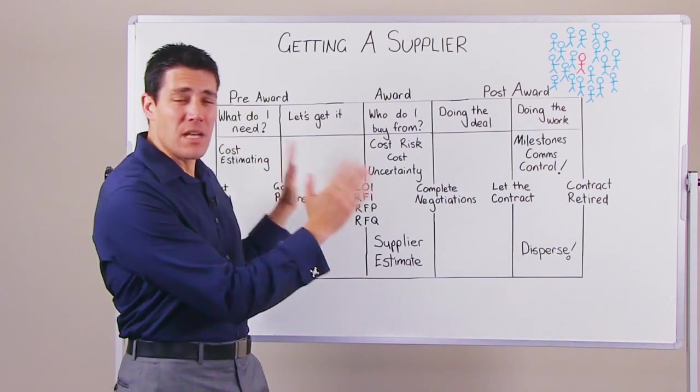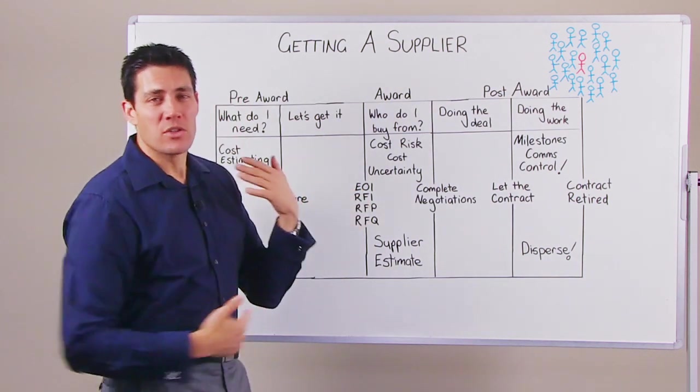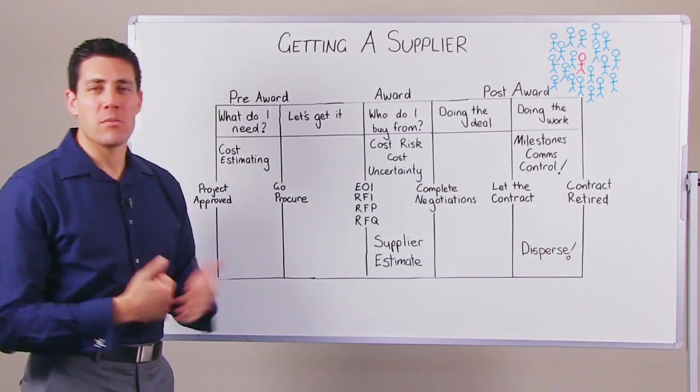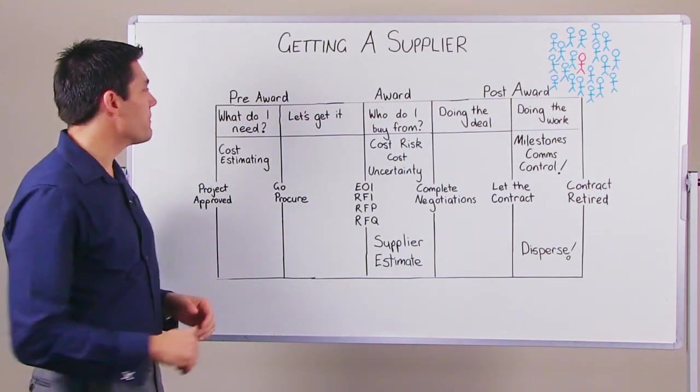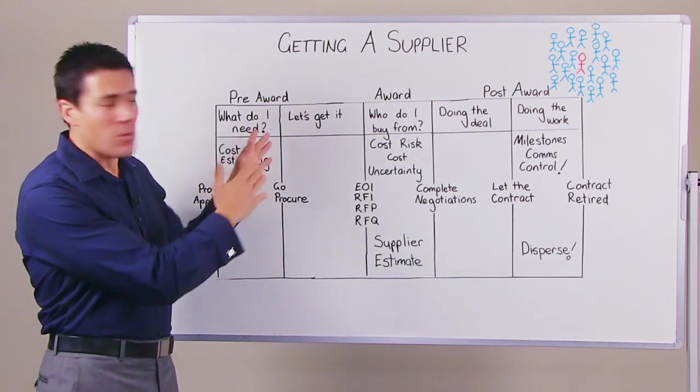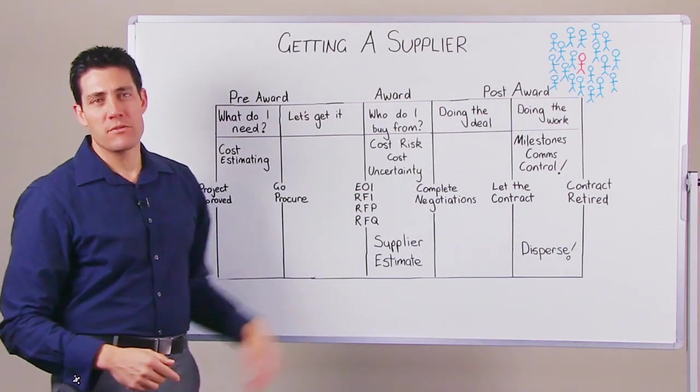It's really a five-step process when you're doing your contract with your supplier, going out to the market and picking the right supplier. There's three main phases: the pre-award phase, the award phase, and the post-award phase.